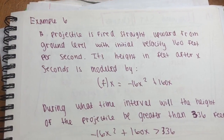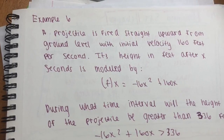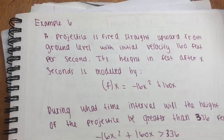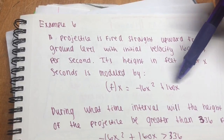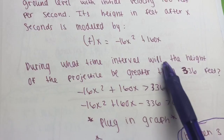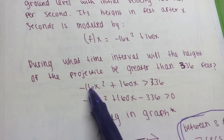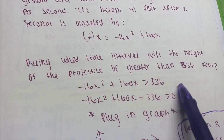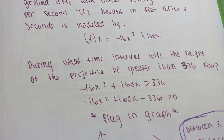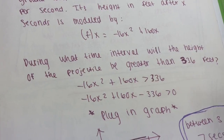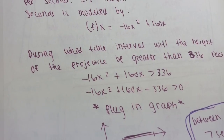Our last example is a word problem. A projectile is fired straight upward from ground level with an initial velocity of 160 feet per second. Its height in feet after x seconds is modeled by f(x) = −16x² + 160x. We want to find during what time interval the height will be greater than 336 feet. We set f(x) > 336, subtract 336, and set the expression greater than 0, then graph it using Desmos.